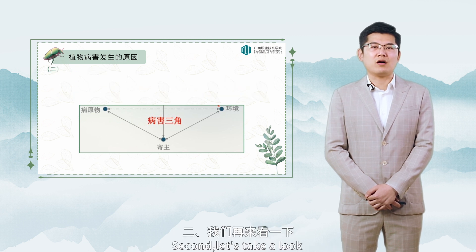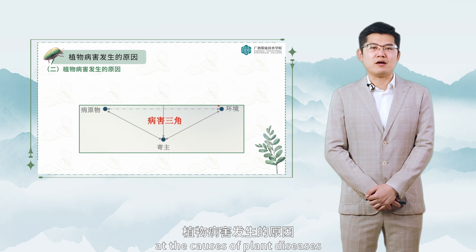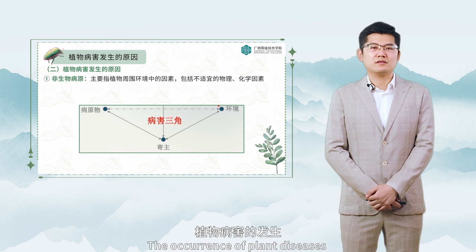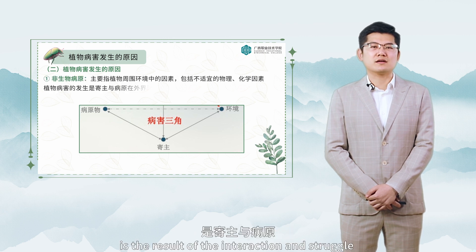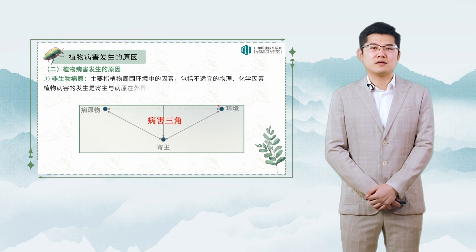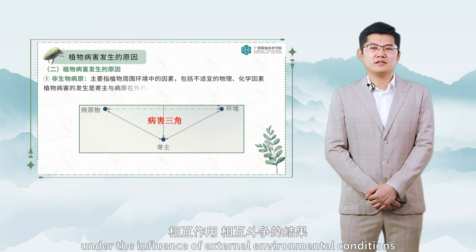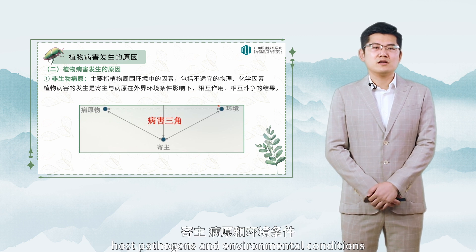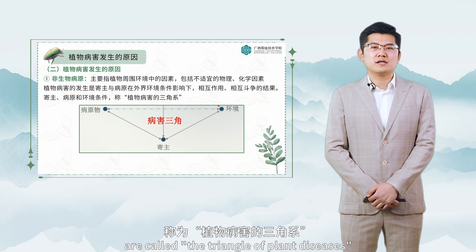Next, let's take a look at the causes of plant diseases. The occurrence of plant diseases is the result of the interaction and struggle between hosts and pathogens. Under the influence of external environmental conditions, host, pathogens, and environmental conditions are called the triangle of plant diseases.